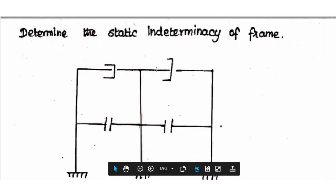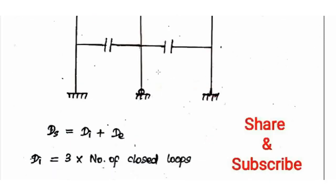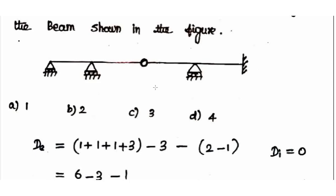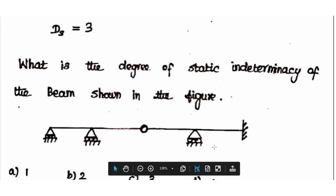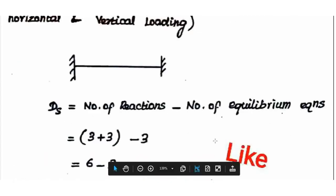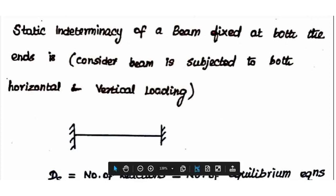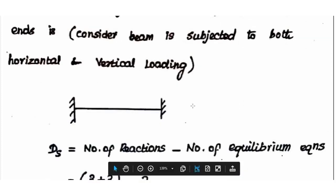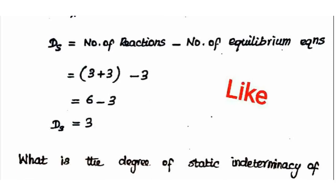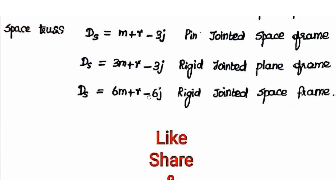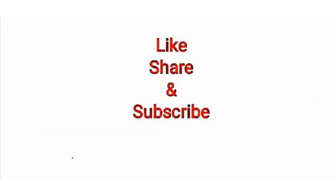So the static indeterminacy of the given frame is 6. We can verify this using the internal hinge approach. We have reviewed examples and previous exam questions in this discussion. Thanks for watching.